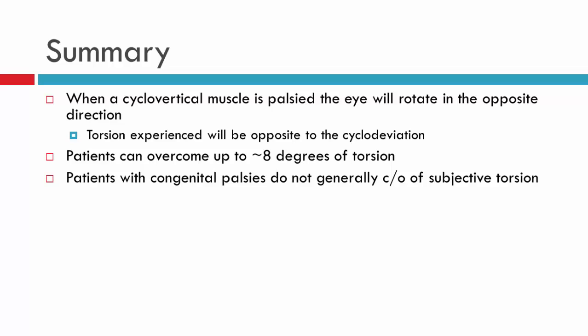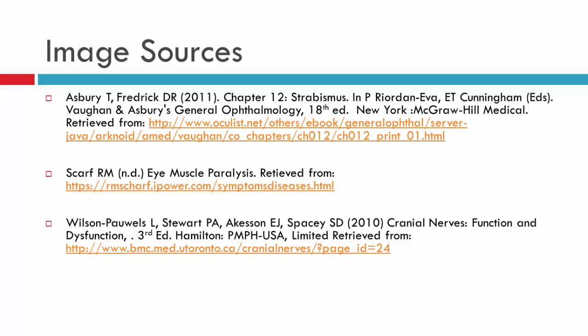In summary, a couple of things to remember. When we have a cyclovertical muscle palsy, the eye will rotate in the opposite direction to the muscle's cyclovertical action. So if that extraocular muscle is an encyclo-adductor, then you'll have an excyclorotated eye and excyclotropia — and the torsion will be opposite to the deviation, meaning the patient will experience intorsion in that example. Remember, patients have the capacity to overcome torsion, with about six to eight degrees fusible through cyclovergences. And patients can adapt to torsion and not report subjective tilt — in these instances, you're generally looking at a patient who's had a long-standing congenital cyclovertical palsy. That brings us to the conclusion of this video. Thank you for watching.